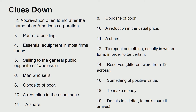Clues down: 2, abbreviation often found after the name of an American corporation; 3, part of a building; 4, essential equipment in most firms today; 5, selling to the general public — opposite of wholesale; 6, man who sells; 8, opposite of poor; 10, a reduction in the usual price; 11, a share; 12, to repeat something usually in written form in order to be certain; 14, reserves; 16, something of positive value; 18, to make money; 19, do this to a letter to make sure it arrives.